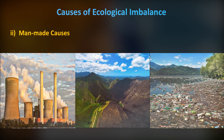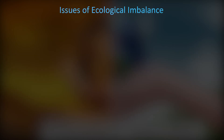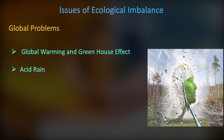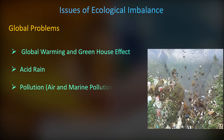Issues of ecological imbalance can occur in certain areas, in certain countries, and globally worldwide. There are global problems we can see, such as global warming and the greenhouse effect. As a result of global warming, the Earth's temperature is growing.